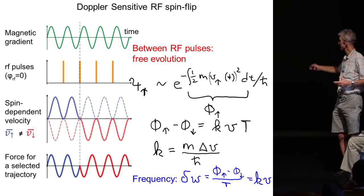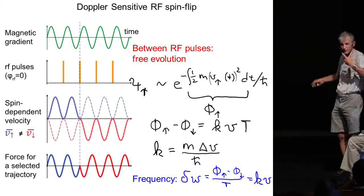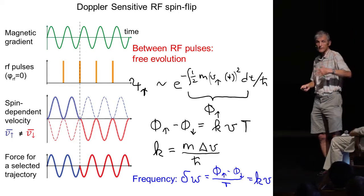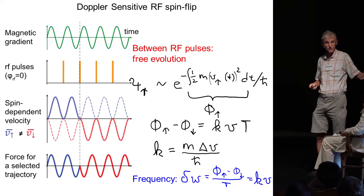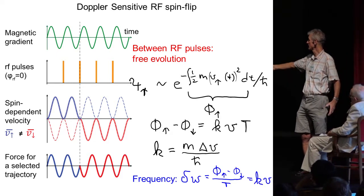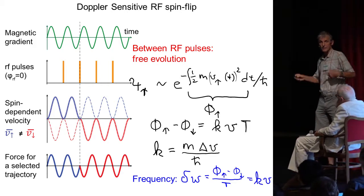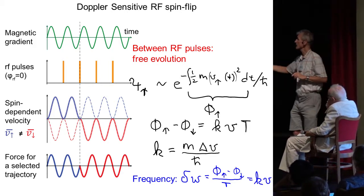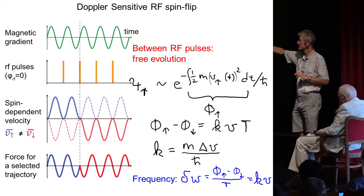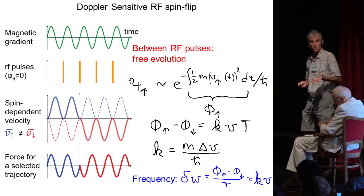And indeed what you find out now is, if you want to compensate for the phase shift between the two pulses, by a detuning of the radio frequency, you have to detune by the Doppler shift. So therefore, in this case with this scheme of alternating magnetic forces and RF pulses, there is also a Doppler shift.